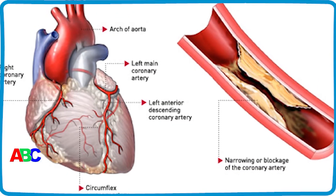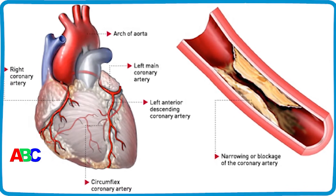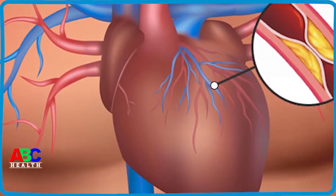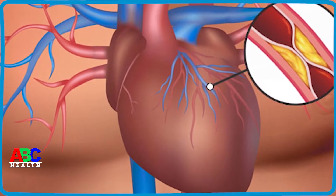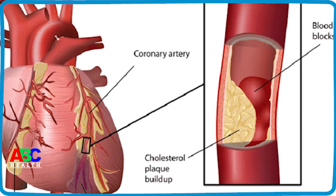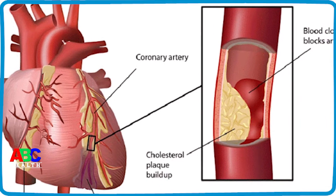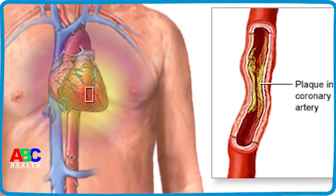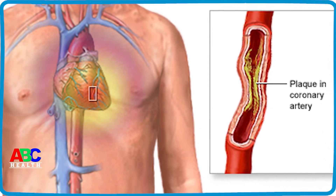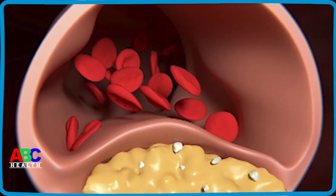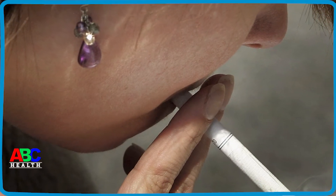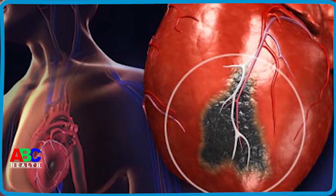A family history of heart disease is associated with a higher risk of coronary artery disease, especially if a close relative developed heart disease at an early age. Your risk is highest if your father or a brother was diagnosed with heart disease before age 55, or if your mother or a sister developed it before age 65. People who smoke have a significantly increased risk of heart disease, and exposing others to secondhand smoke also increases their risk.